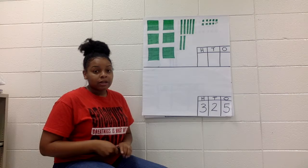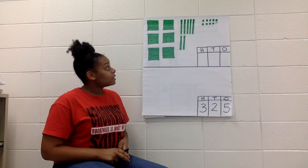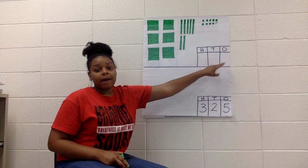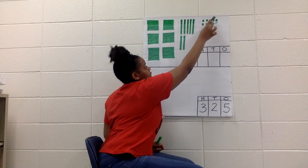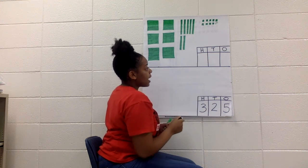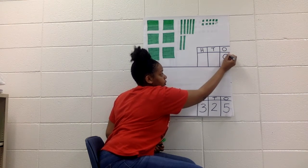We're going to go ahead and count and see how many we have in each place. When I'm done counting my ones, I'm going to record it in my ones place. So let's go. 1, 2, 3, 4, 5, 6, 7, 8, 9. I have nine ones here.